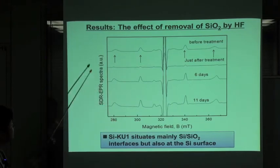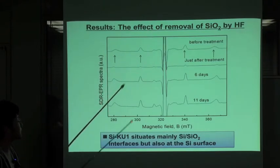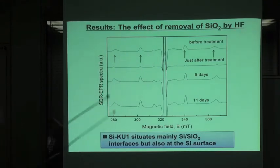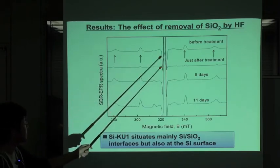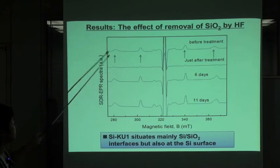This figure shows the result. The first line is the signal before the HF treatment. The second line is the signal just after the HF treatment. From these two lines, the intensity of the KU1 signal decreases.